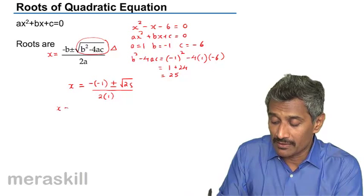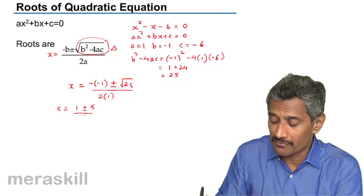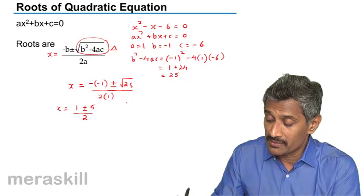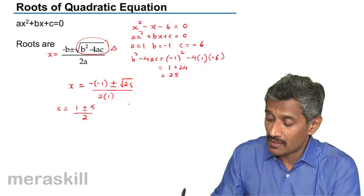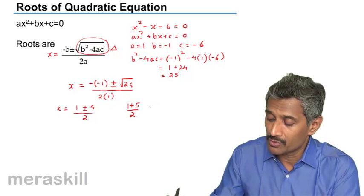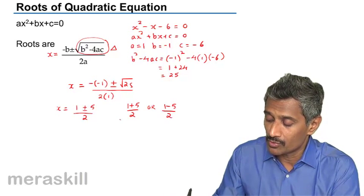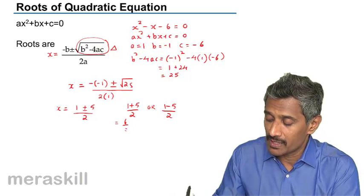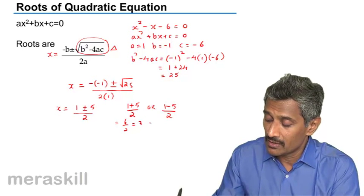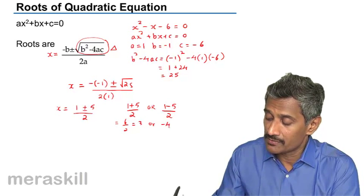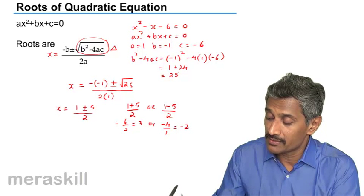This means x = (1 ± 5)/2, which is (1 + 5)/2 or (1 - 5)/2. This gives us 6/2 = 3, or -4/2 = -2.